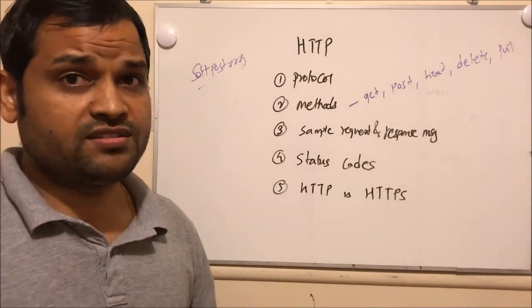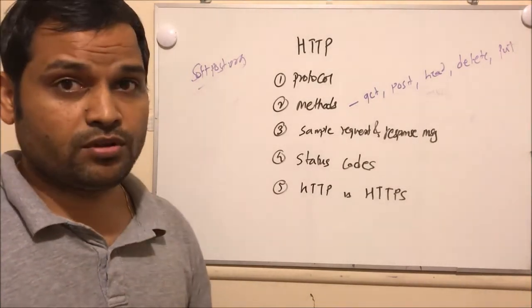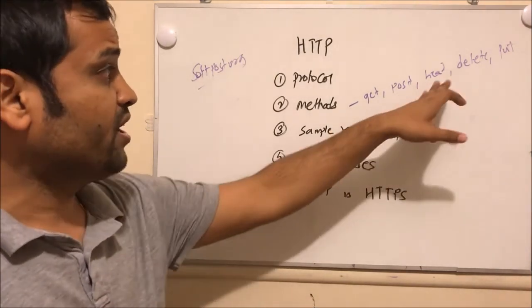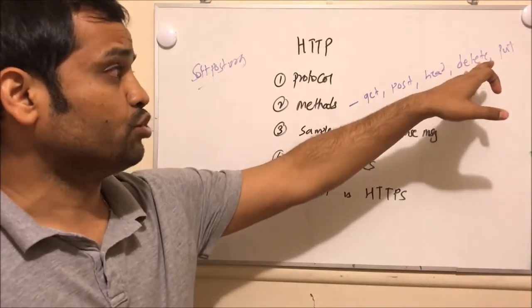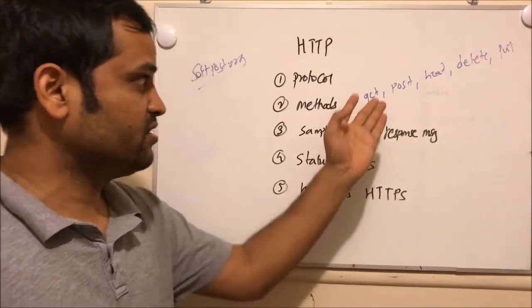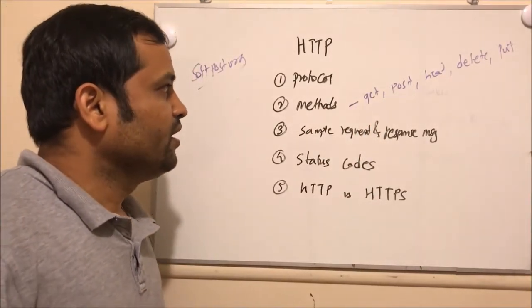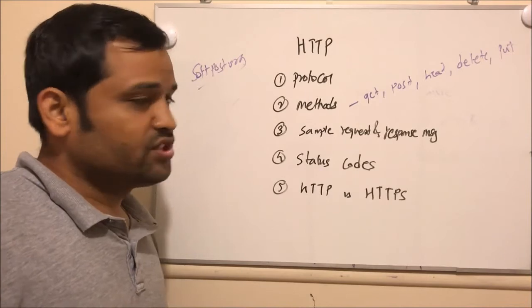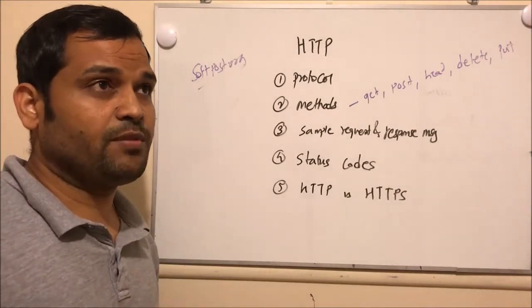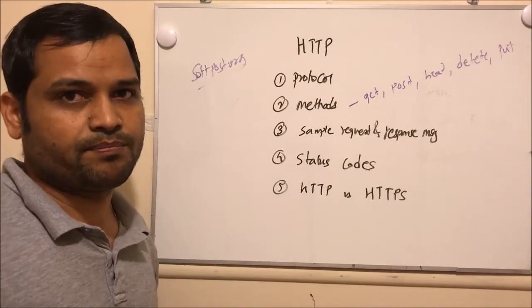Now let us see what are the different methods in this HTTP protocol. Some of the important methods are GET, POST, HEAD, DELETE, and PUT. There are other methods which I haven't covered because these are the most important methods that we generally use. The GET method is very easy — if you want to access any website, the first request that is sent is the GET request.